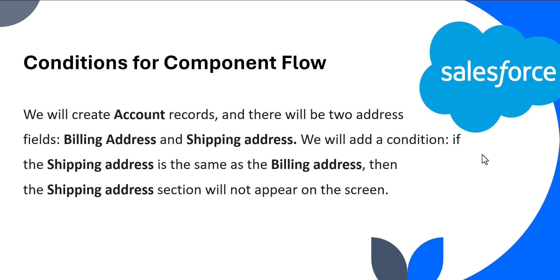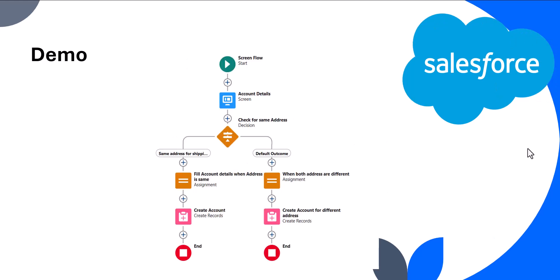The condition we are going to define in this example: we will create a screen flow that will create account records from user input. For creating account records we have two address fields — billing address and shipping address. If the shipping address is the same as the billing address, the shipping address section will not appear on the screen. We will also add a checkbox field that, when selected as true, hides the shipping address section.